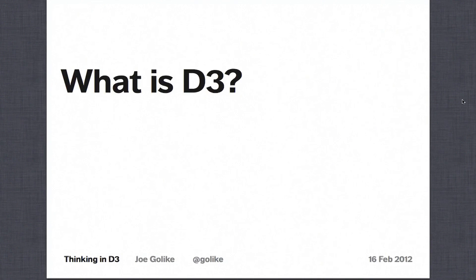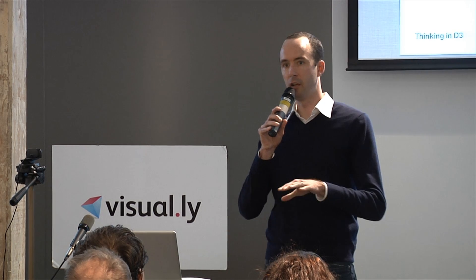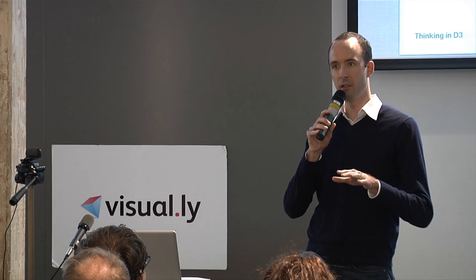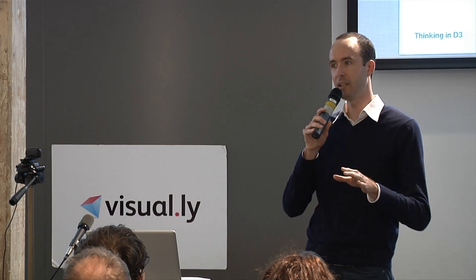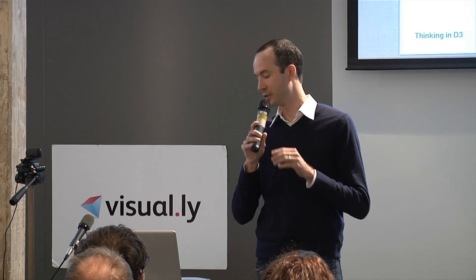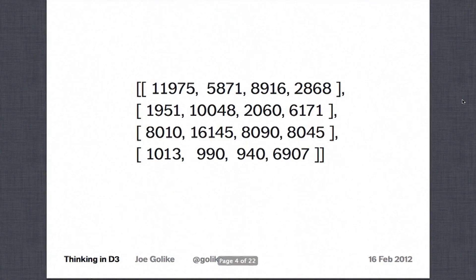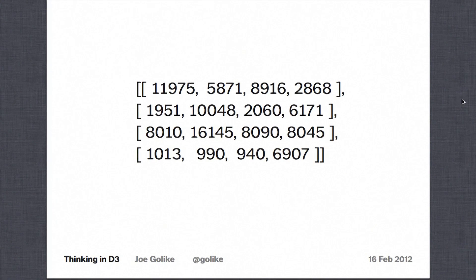So what is D3? D3, if you visit the website, is a technology that allows you to bind arbitrary data to a document object model, or DOM, and then apply data-driven transformations to the document. Now if you're an engineer, that may make a lot of sense to you. If you're a designer or a non-techie, maybe we need a different approach. Basically, D3 is a JavaScript technology that lets you take data and turn it into really cool visual stuff.